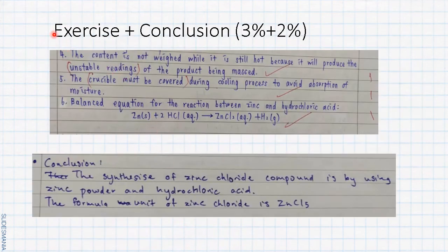The third precaution step: you can mention why we have to heat the zinc chloride slowly, because we have to ensure that the solution does not splatter during the heating process.